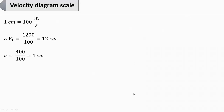We will take the velocity scale as 1 centimeter equal to 100 meter per second. So V1 of 1200 meter per second will be represented as 1200 divided by 100, which is 12 centimeter on the diagram. Similarly, blade speed U is 400 divided by 100, that is 4 centimeter.